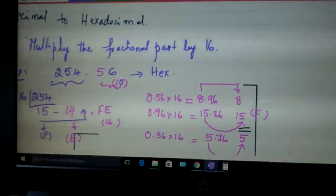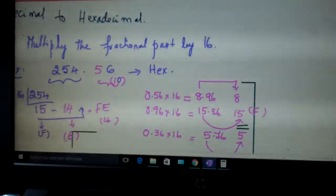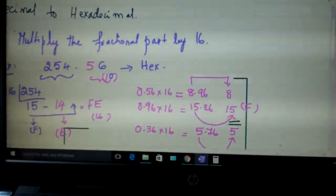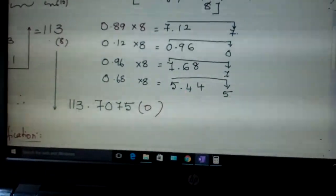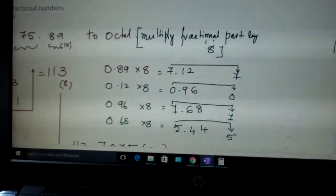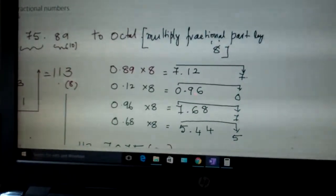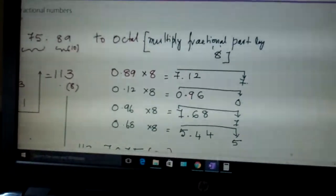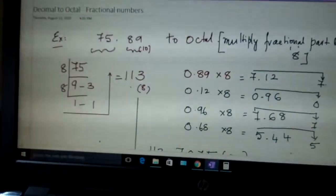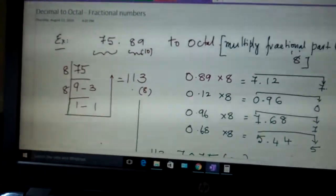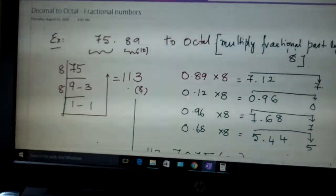Same way decimal to octal. We will be multiplying it with 8. So when you are doing this, some example I have taken here: 75.89. So once again consider the whole number part, 75. Go on dividing it by 8. Write the remainders in this order. You get this.